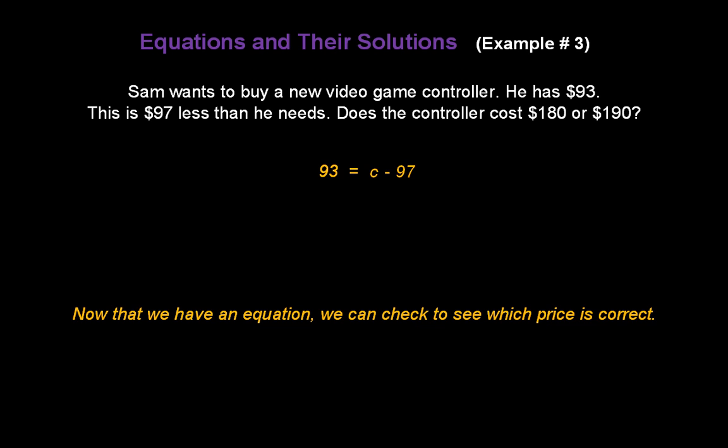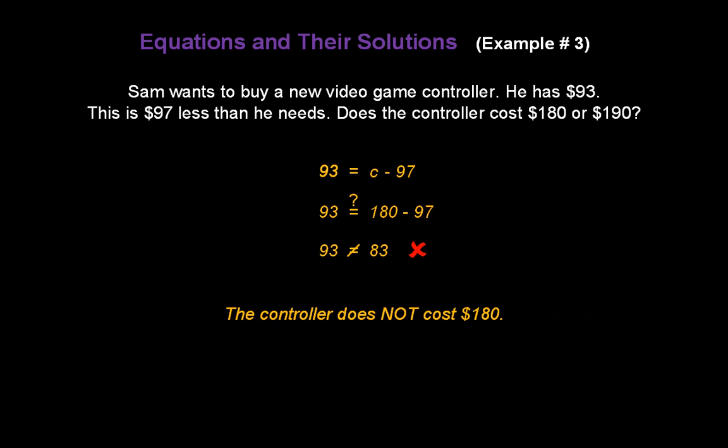Now that we have an equation, we can check to see which price is correct. Replace C with $180 first. Does 93 equal 180 minus 97? Solve the right-hand side. Does 93 equal 83? Obviously, the answer is no. 93 does not equal 83. So the controller does not cost $180.